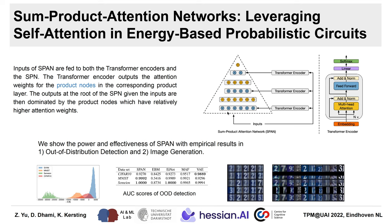We show the power and effectiveness of SPAN with empirical results in two use cases. For out-of-distribution detection, SPAN separates the out-of-distribution data better than baselines, measured by a higher AUC score for OOD classification. For image generation, SPAN generates images with good quality and can do image completion with a smaller reconstruction error.